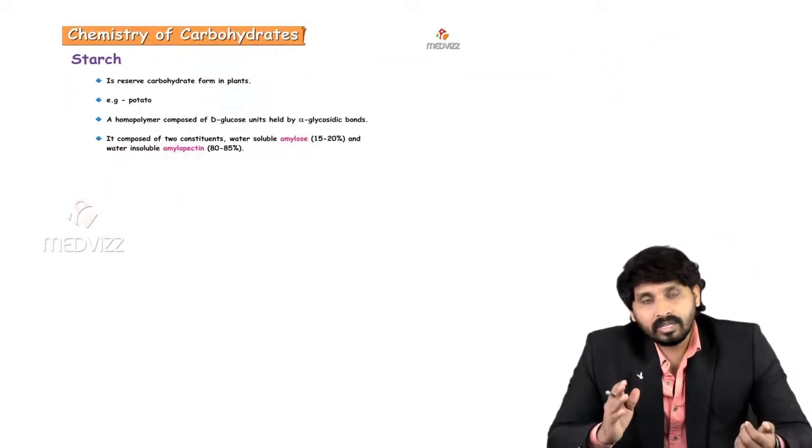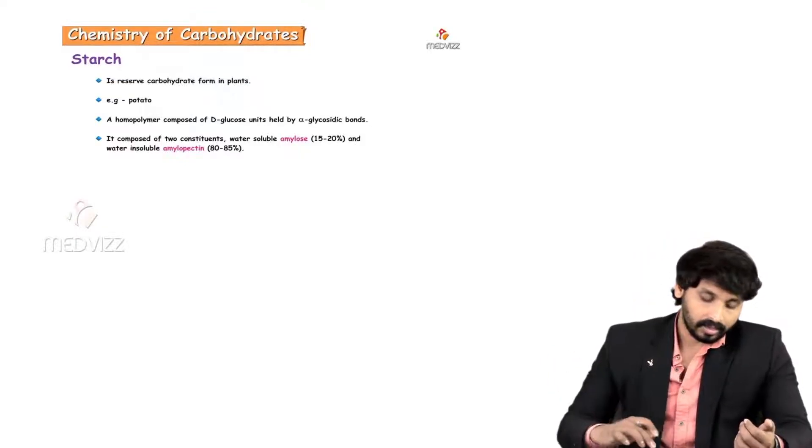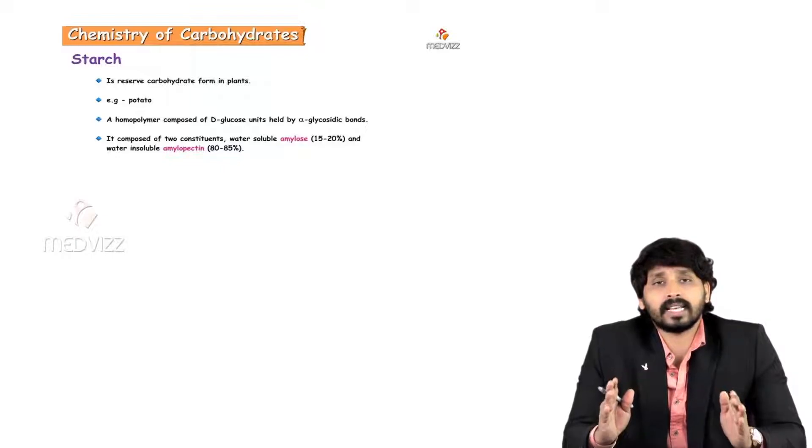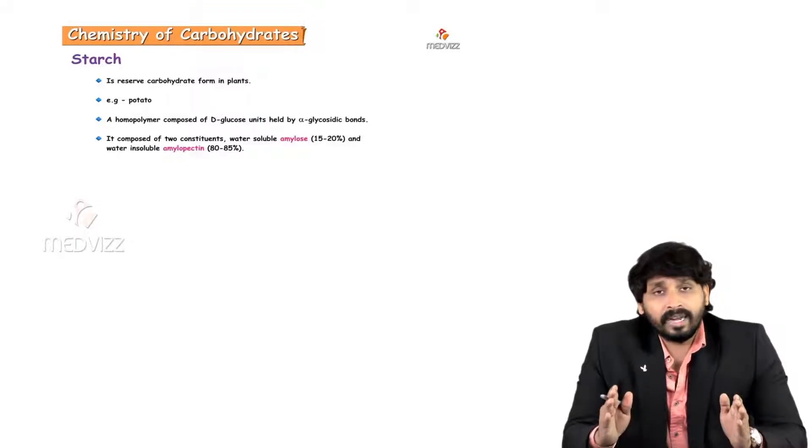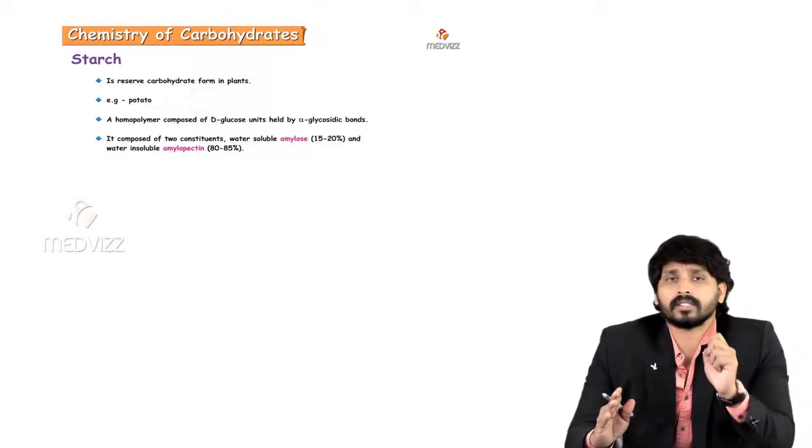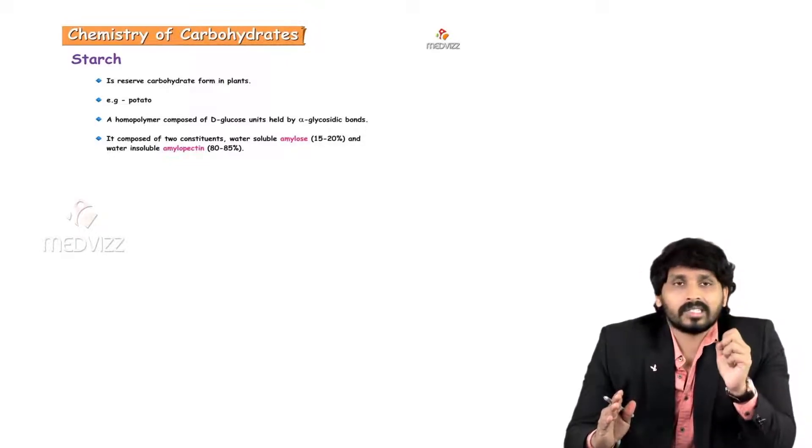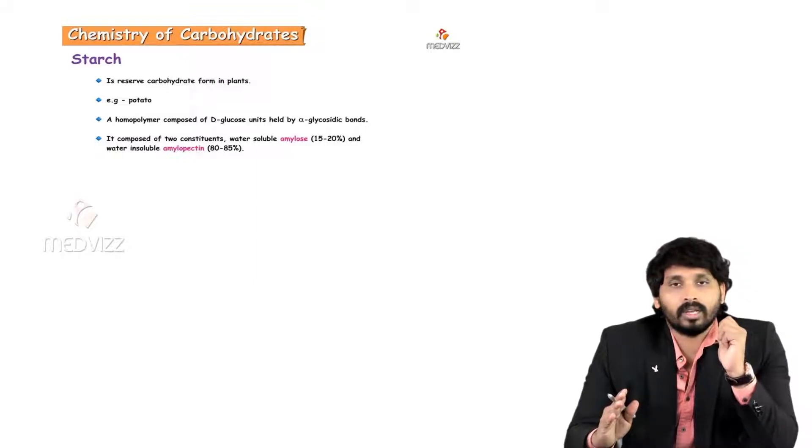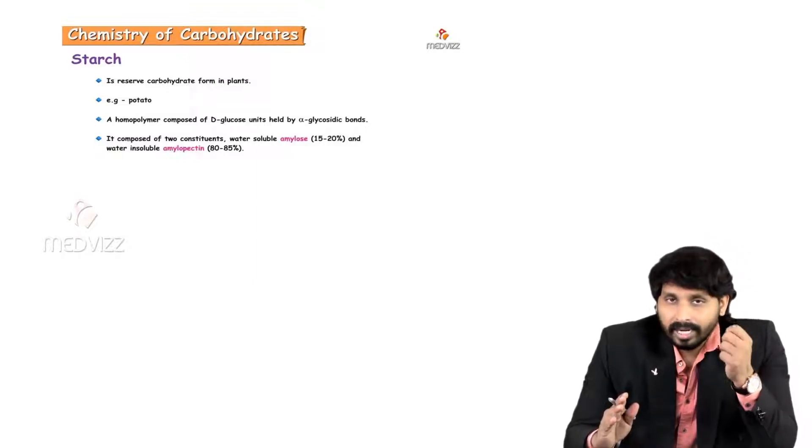The major predominant homopolysaccharide to discuss is starch. Starch is a reserved carbohydrate in plants. How do starch synthesize in plants? By using carbon dioxide with the help of sunlight and the pigment chlorophyll, plants synthesize starch. The storage form of carbohydrate in plants is starch by the process photosynthesis.